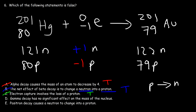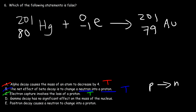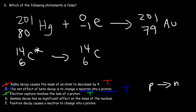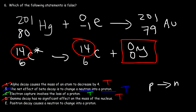Statement D: gamma decay has no significant effect on the mass of the nucleus. If a high energy carbon-14 atom in the excited state emits a high energy photon, the mass doesn't change and the atomic number does not change. The number of protons and neutrons is constant. So statement D is true — gamma decay has no significant effect on the mass of the nucleus.